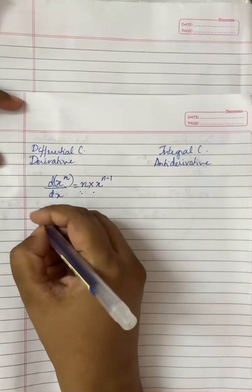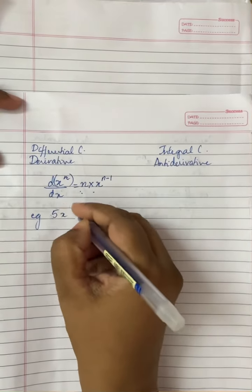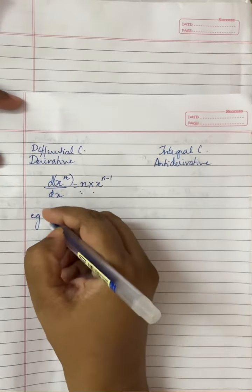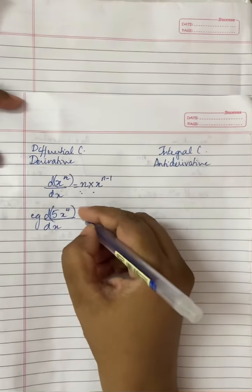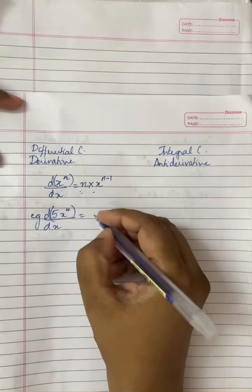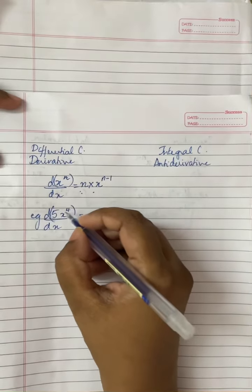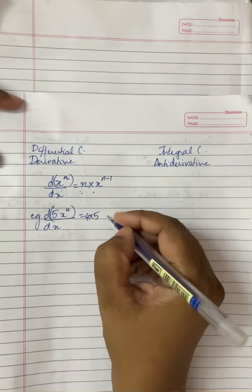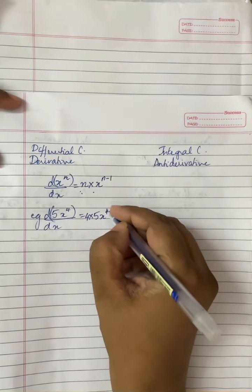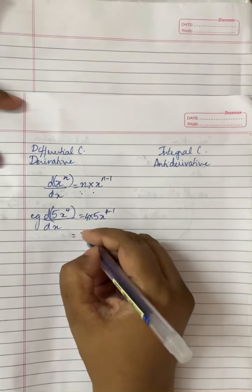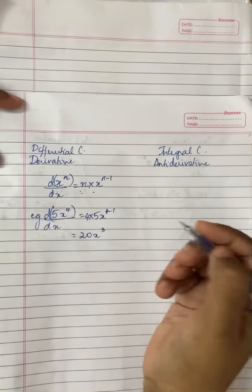For example, if I have 5x power 4 and I need to differentiate this with respect to x, then as I said the power is multiplied. So 4 times 5 and the power of x is reduced by 1. So 4 minus 1 and that gives me 20x cube.